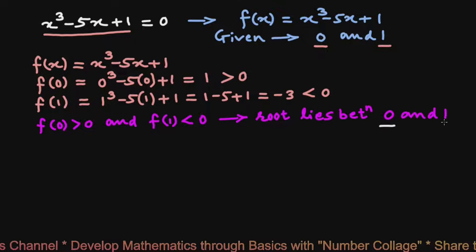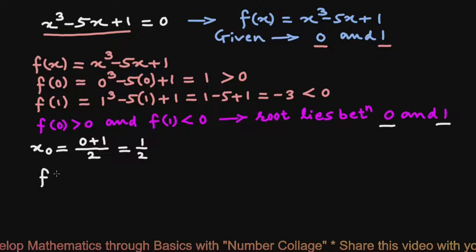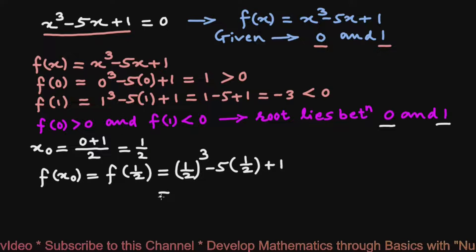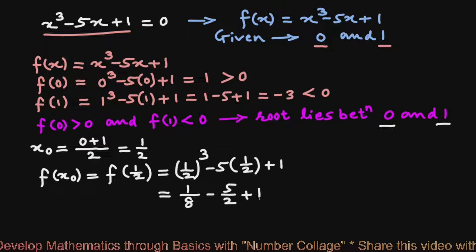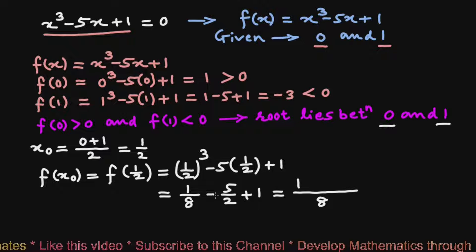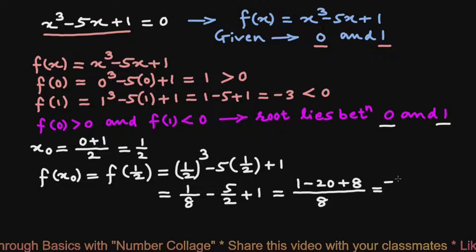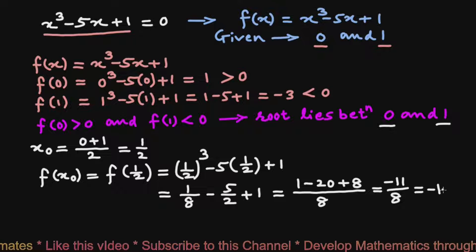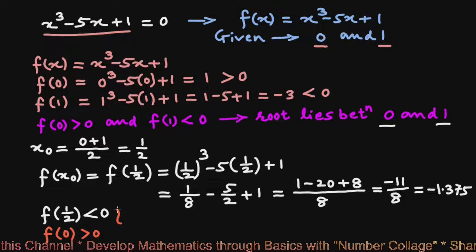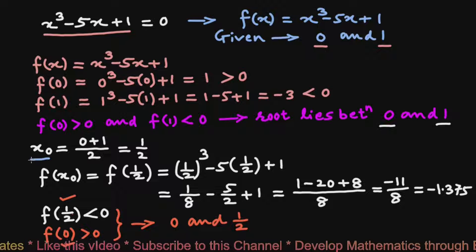We find the midpoint of 0 and 1 and name the first approximate root x₀ = (0 + 1)/2 = 1/2. Then f(1/2) = (1/2)³ - 5×(1/2) + 1 = 1/8 - 5/2 + 1 = (1 - 20 + 8)/8 = -11/8 = -1.375, which is negative. Since f(1/2) is negative and f(0) is positive, the next approximate root lies between 0 and 1/2. The first approximate root x₀ is 1/2.